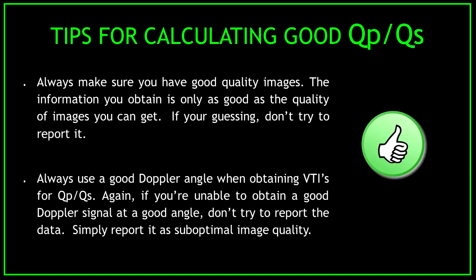Some tips for calculating a good QPQS: always make sure you have good quality images. The information you obtain is only as good as the quality of the images you can get. If you are guessing, don't try to report it. Always use a good Doppler angle when obtaining VTIs for QPQS. If you are unable to obtain a good Doppler signal at a good angle, don't try to report the data — simply report it as suboptimal image quality.